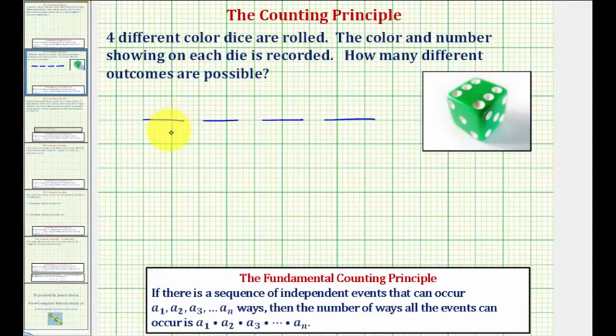Where again, each event would be the result of one roll of one of the die. So let's call this event d₁, this event d₂, this event d₃, and this event d₄.